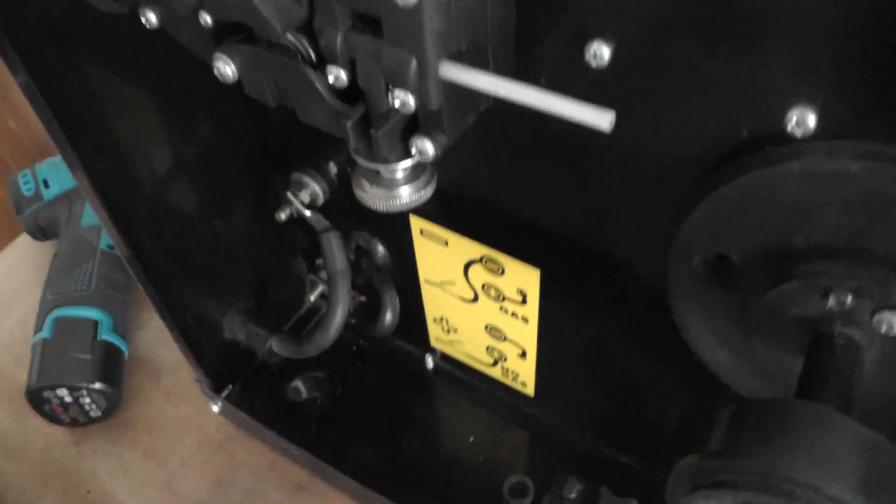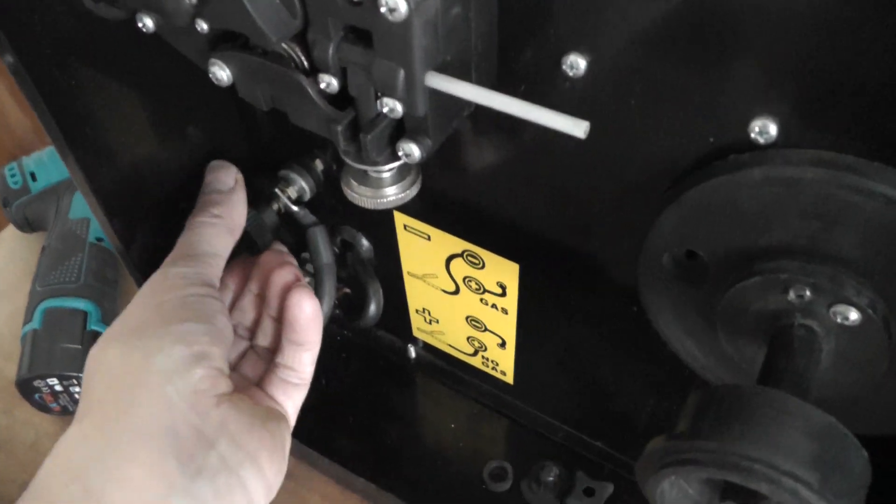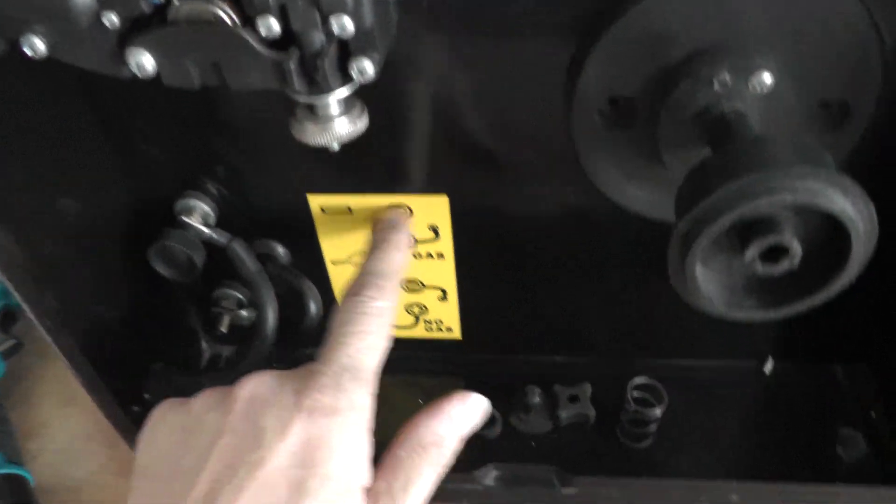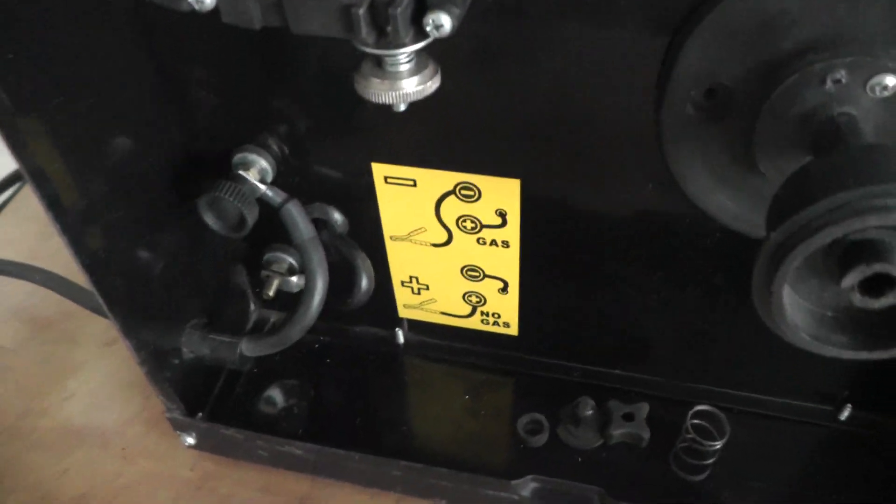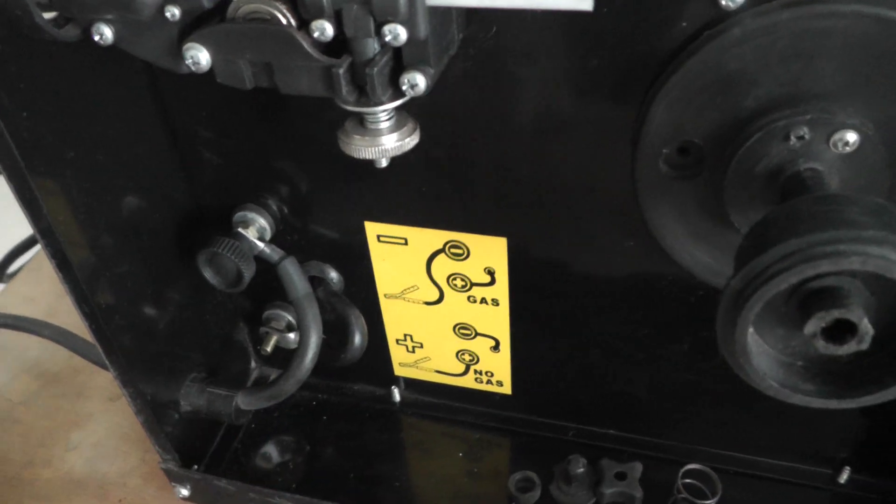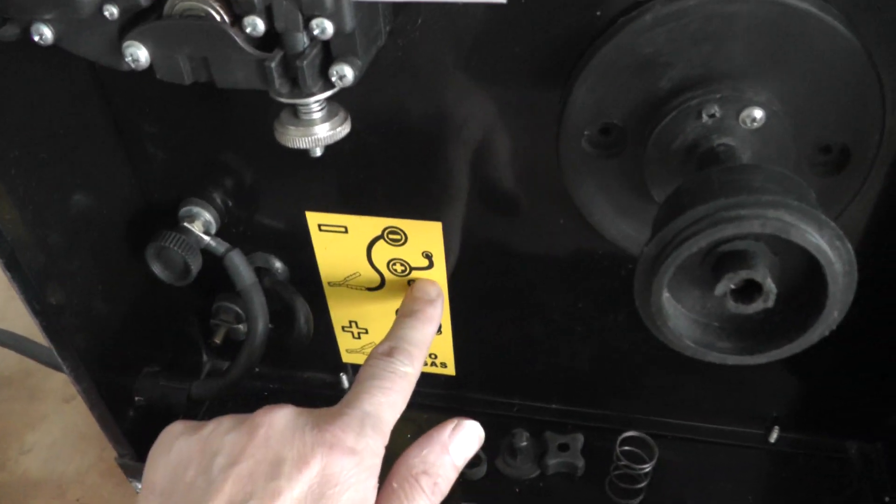That's it. You just switch the leads around, and now the earth electrode should be on the negative side, ready for gas.